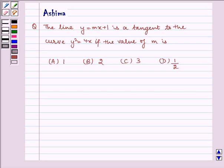Hello and welcome to the session. Let us understand the following question: the line y = mx + 1 is a tangent to the curve y² = 4x if the value of m is (A) 1, (B) 2, (C) 3, (D) 1/2.